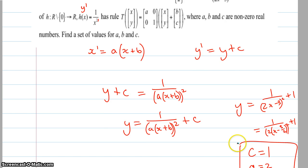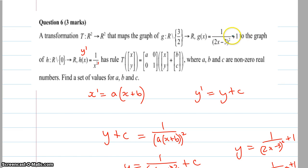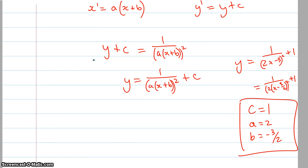So if I want to get that original graph here to go into this transformation to get back to my original graph, I would need to make sure that those things are there. So c is one, a is two, and b is negative three on two.